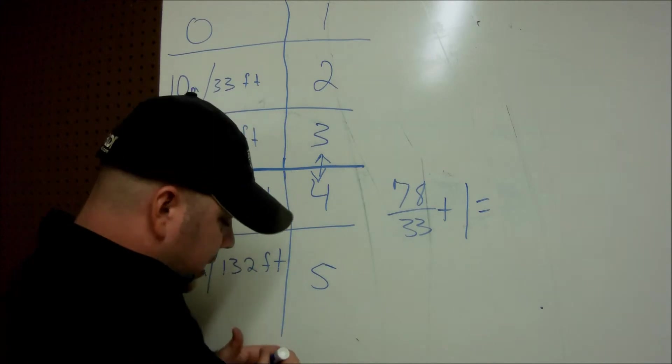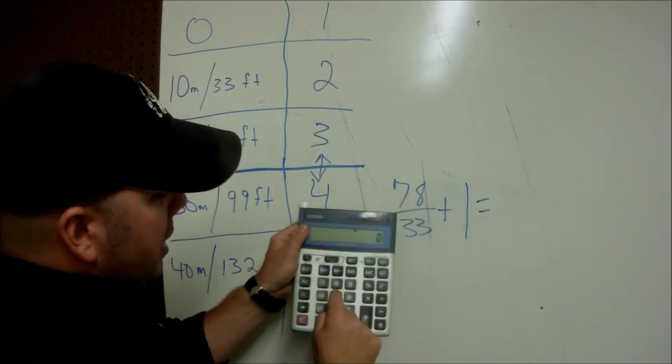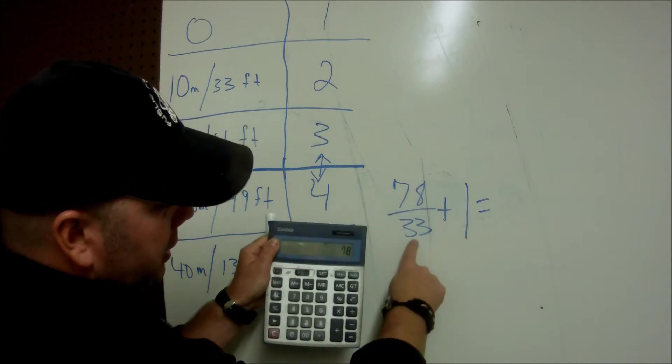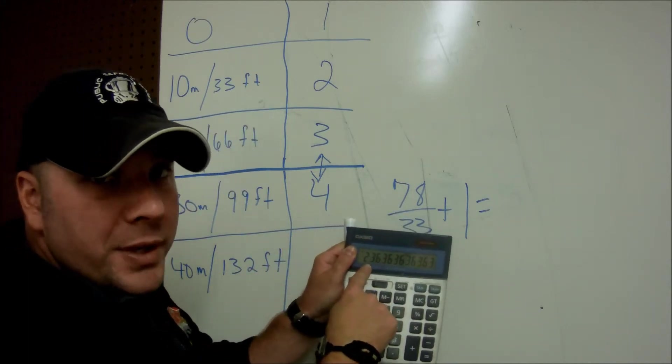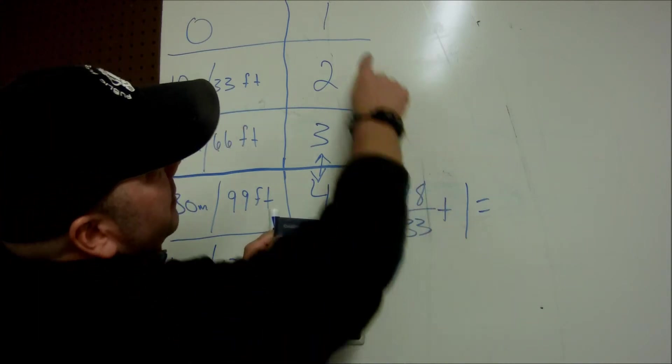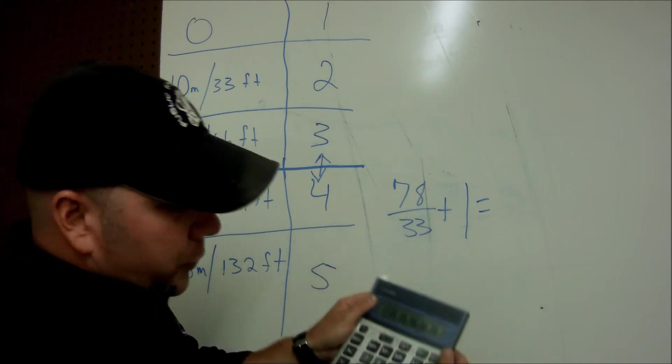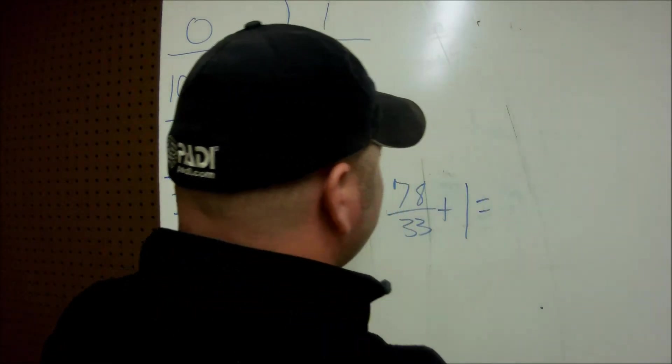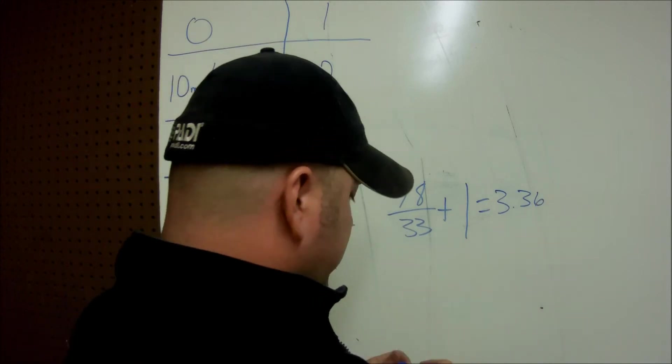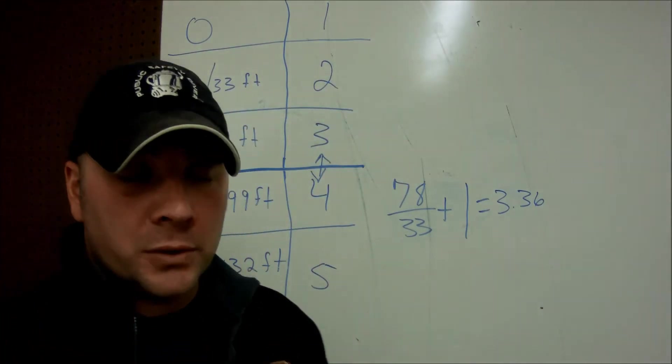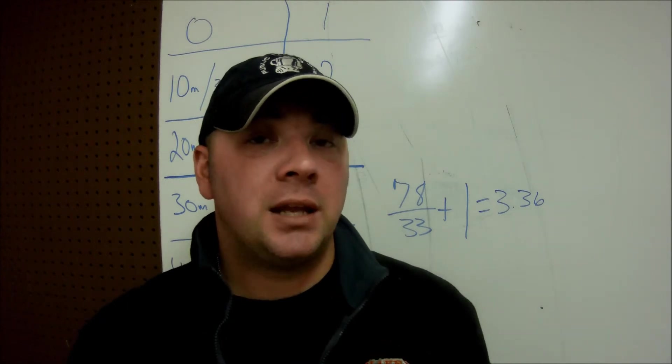Which should give me the exact same answer. So doing this method, I'll do 78 divided by 33, which comes up to 2.36. Well, if I add the surface atmosphere back to it, I get 3.36, which is the exact same thing that we just got doing the other calculation. So either method is going to work for you. It's whichever one is easier for you to understand and to try to memorize.